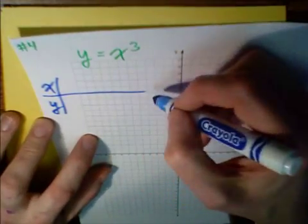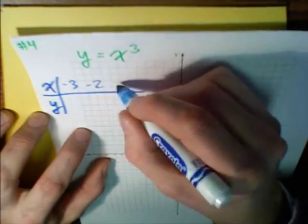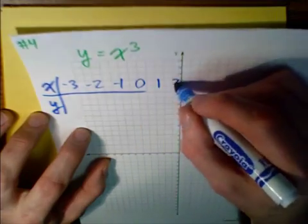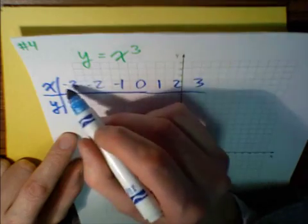And it's nice to sometimes pick some simple values: say negative 3, negative 2, negative 1, 0, 1, 2, and 3. And then figure out what the y values would be. Now again, we're cubing.